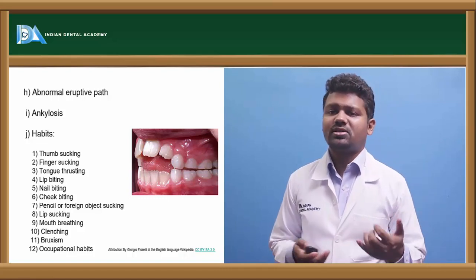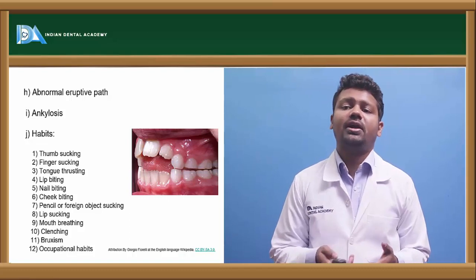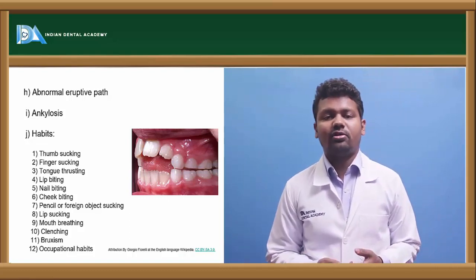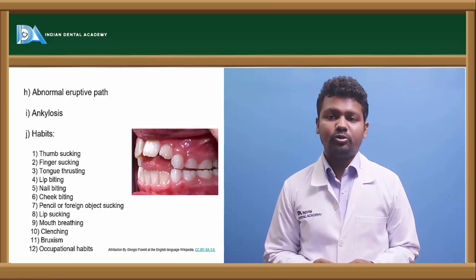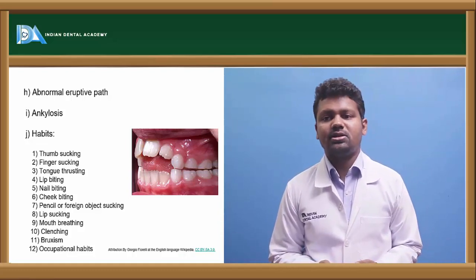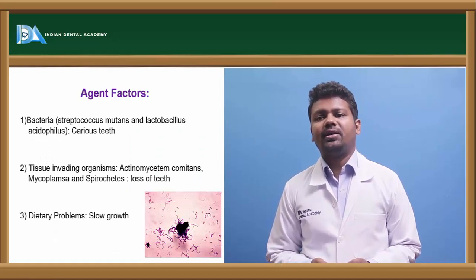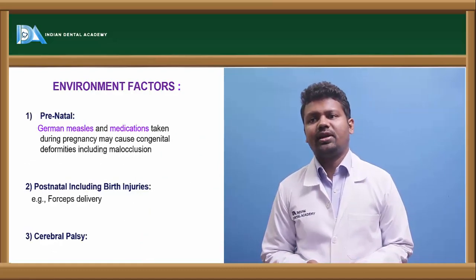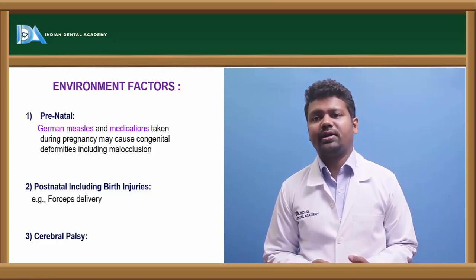Ankylosis and habits like thumb sucking, finger sucking, lip biting, nail biting, cheek biting, pencil or foreign object sucking, mouth breathing, clenching, bruxism, and occupational hazards. The agent factors include bacteria, tissues, and dietary problems, whereas environmental factors are prenatal and postnatal.